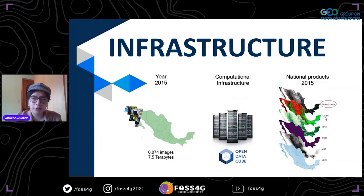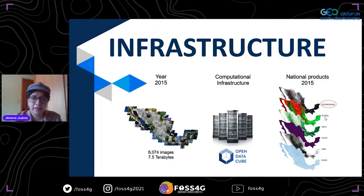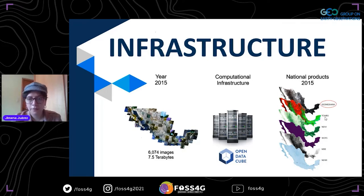From that moment we started developing automated scripts to allow us to ingest the updates of the information — the images released each week by USGS and NASA. So it was a two-year process in which we started with a training, a set of images, testing, and by the end of 2019 we had an operational data cube which was automatically incorporating newly available information released weekly by NASA.